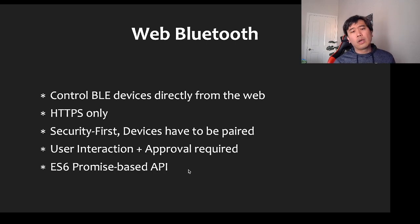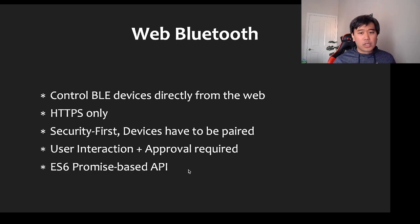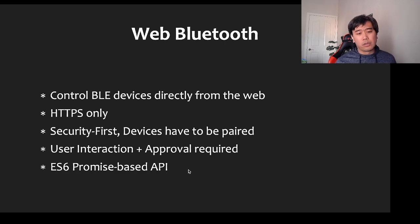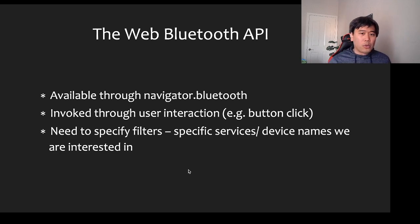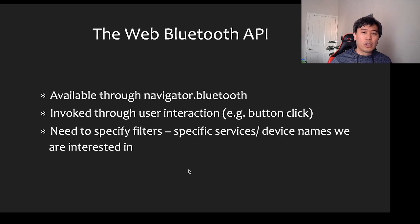Web Bluetooth is a way to control Bluetooth Low Energy devices directly from the web. It's HTTPS only — security first — devices have to be paired before you can interact, it prompts for user interaction, and it's a promise-based API. It's only available through navigator.bluetooth and requires a button click for user interaction.